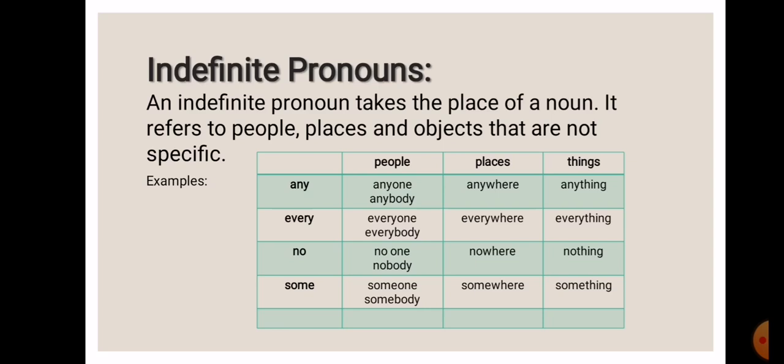Similarly, with things, pronouns ending with T-H-I-N-G are used to refer to things. For example, anything, everything, nothing, something.